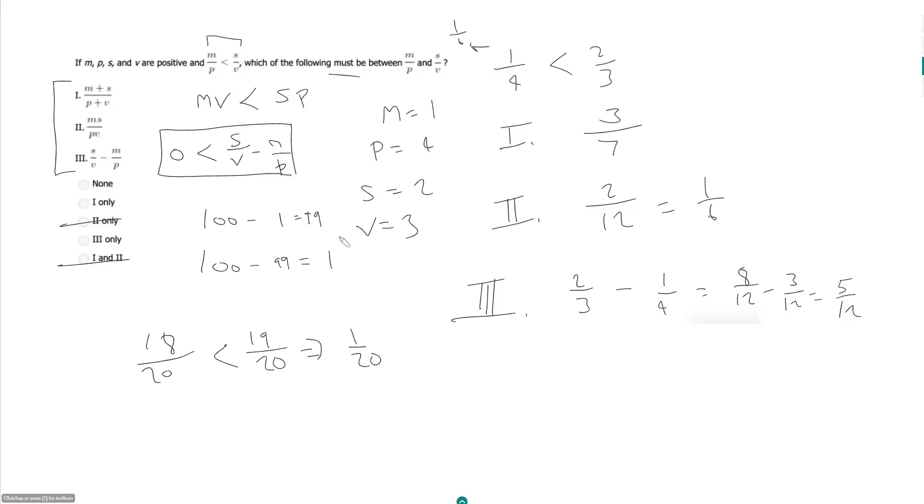And 1 over 20 is definitely not between 18 over 20 and 19 over 20. So this does not always have to be true. So anything with a 3 in that, I can eliminate. So then it just comes down to 1 and none.